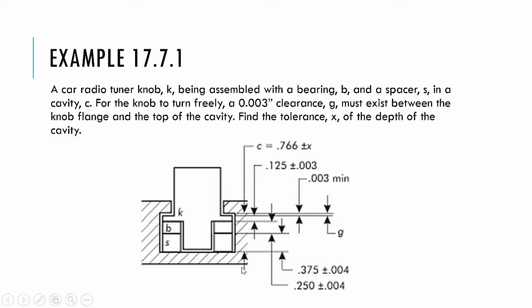Let's look with the spacer. I need to know its dimension, so it's here and there. That's 0.375 plus or minus 4. Then this bearing would be here and here. That'd be 0.25 plus or minus 4. Then we have here to here, 0.125 plus or minus 0.003. And then finally, we have the clearance, which is the overall here. We know that this clearance has to be 0.003.